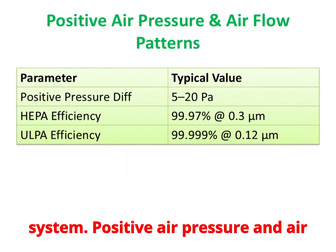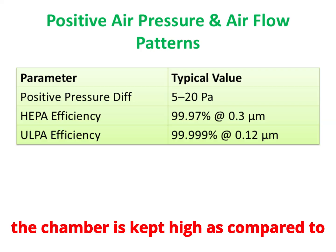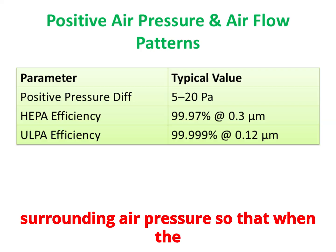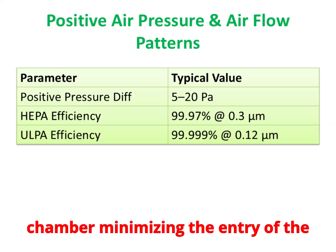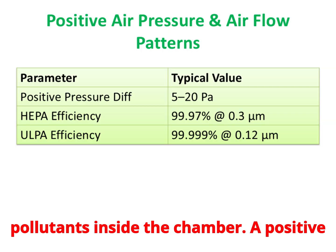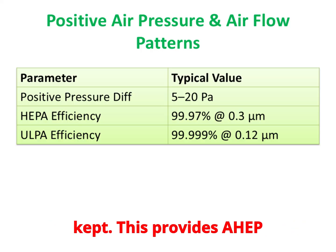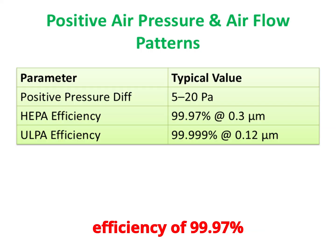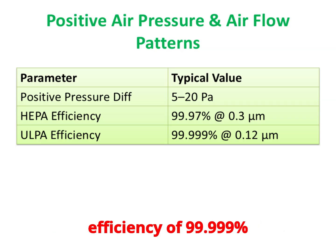The air pressure inside the chamber is kept higher than the surrounding air pressure, so that when the door opens, air flows out of the chamber, minimizing the entry of pollutants. A positive pressure difference of 5 to 20 Pascals is maintained, providing HEPA efficiency of 99.97% for 0.3 micrometer particles and ULPA efficiency of 99.999% for 0.12 micrometer particles.